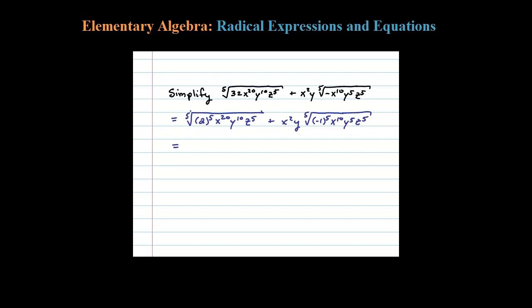Remember that's a fifth root. So the fifth root of 2 to the fifth is 2. The fifth root of X to the 20th is X to the fourth. Notice 5 goes into that exponent four times evenly. The index 5 goes into 10, so that simplifies as Y squared.